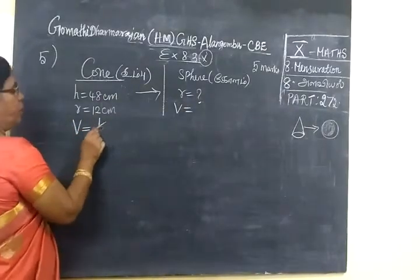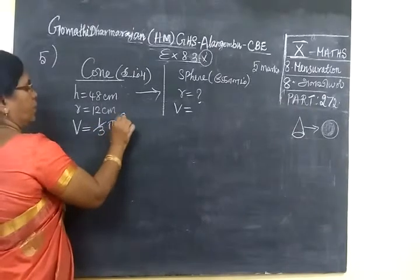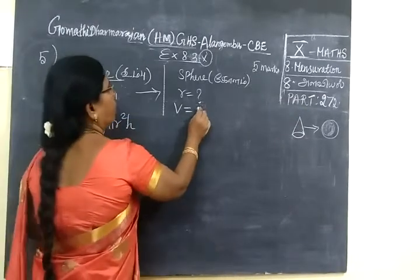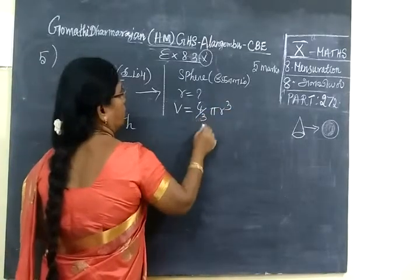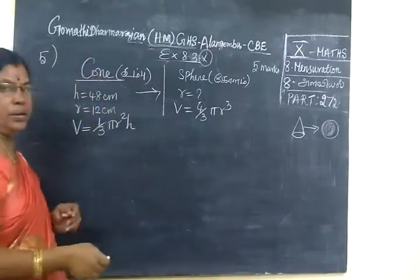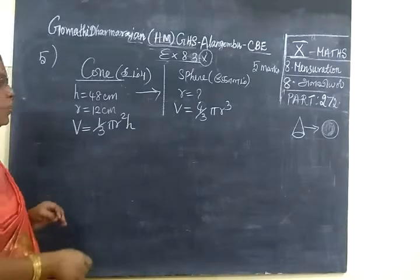The formula: 1 by 3 π r² h. This is the volume formula: 4 by 3 π r³. This R is unknown, that's what we want to find.